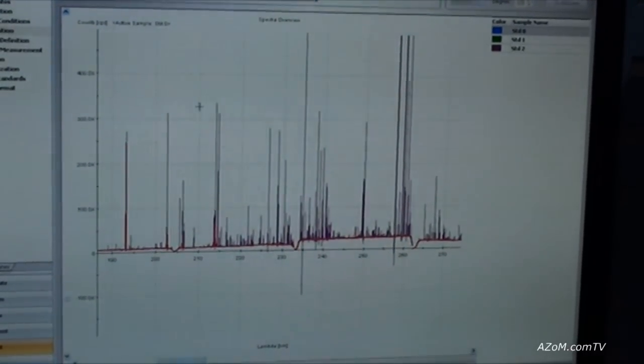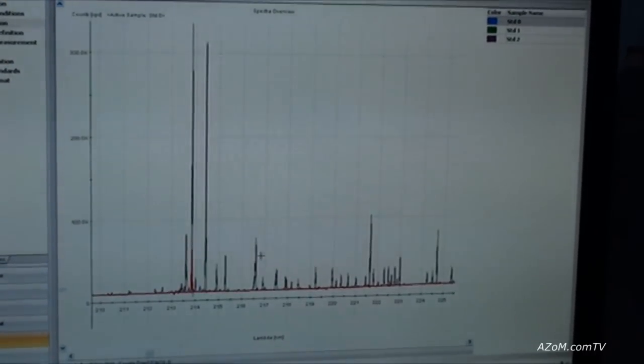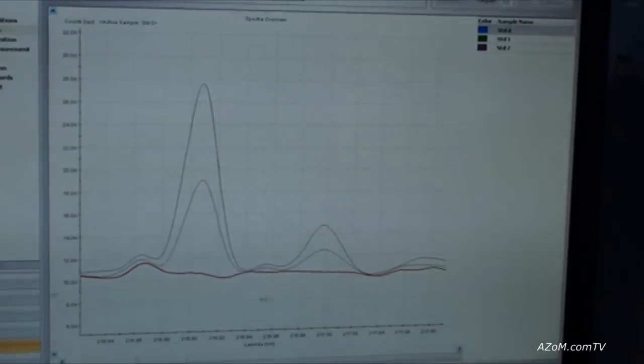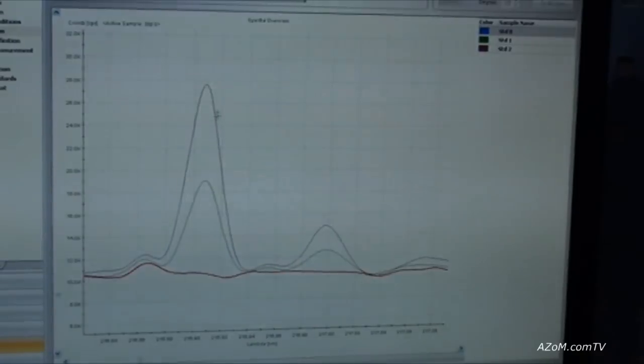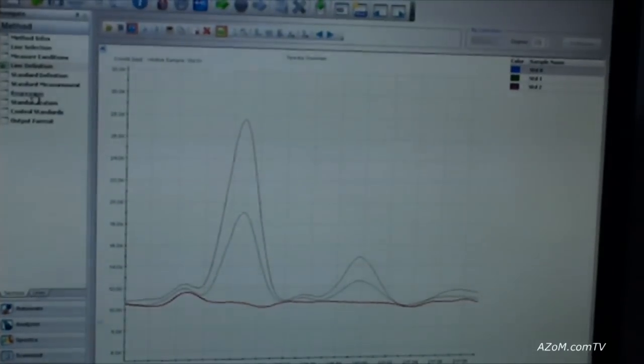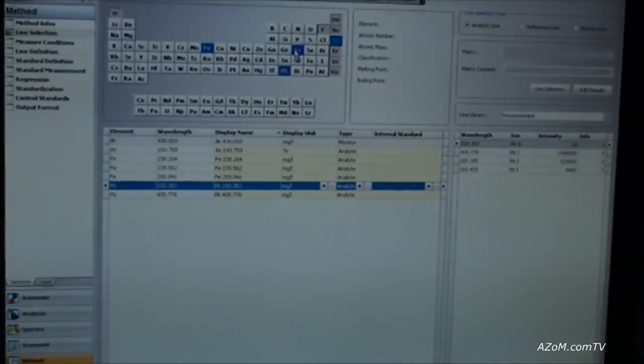So, if I bore down, we can get to single element concentrations and you can see here 0, 10, and 20 ppm. If I wanted to see what that correlates to in terms of analytes and regressions, this method is set up for iron, lead, and arsenic.